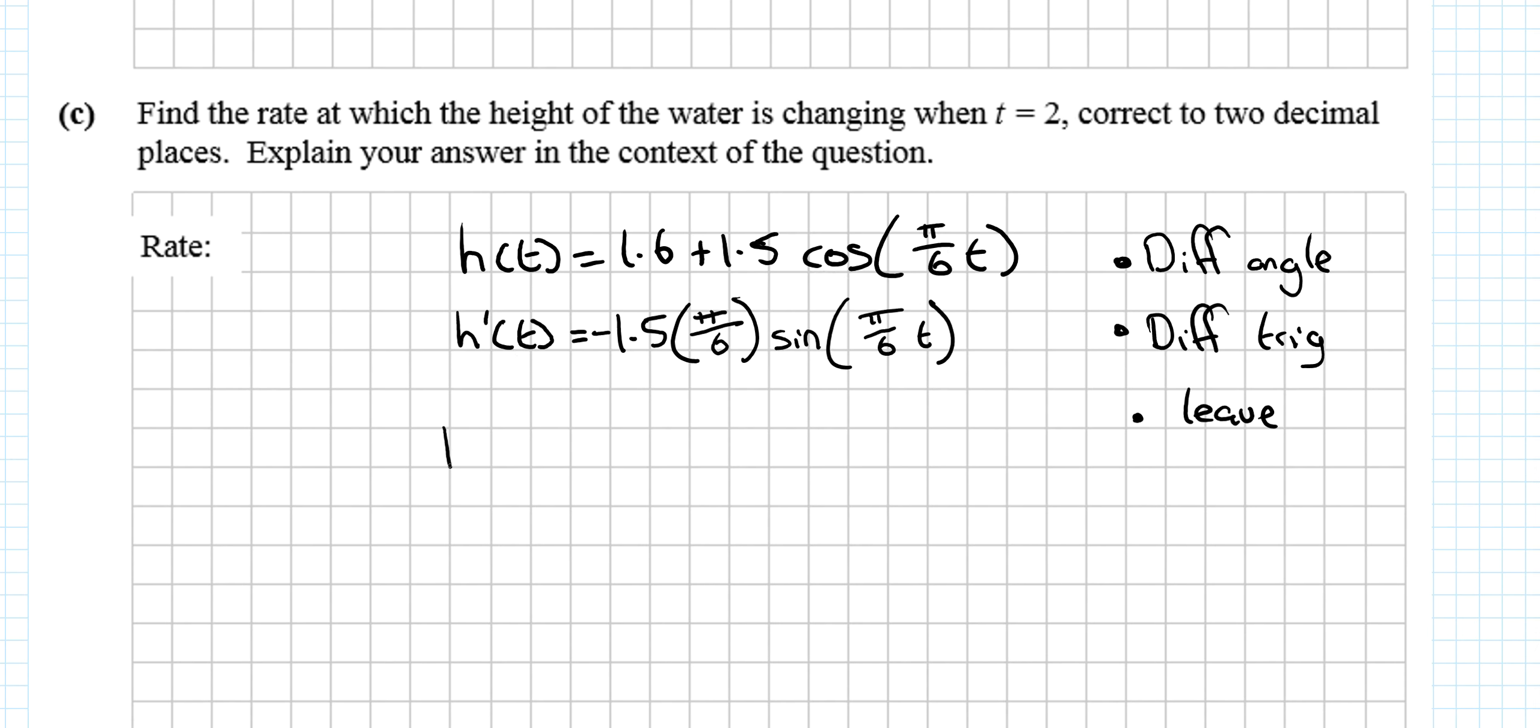Cos goes to minus sine, with the minus at the front: sin(πt/6). We want to find this when t equals 2. So h'(2) = -1.5 × π/6 × sin(π/6 × 2). We can type this entire thing into our calculator - just make sure your calculator is in radians. We get -0.68.